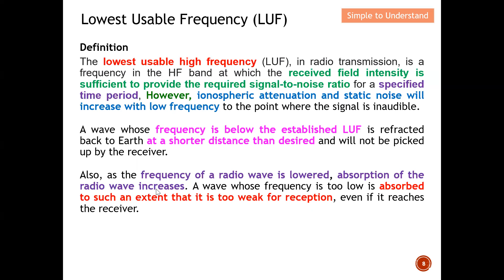Also, as the frequency of a radio wave is lower, absorption of the radio wave increases. A wave whose frequency is too low is absorbed to such an extent that it is too weak for reception even if it reaches the receiver. When using as low a frequency as possible, the skip zone is minimal — ideal for covering shorter paths — but the atmospheric absorption and static noise become so large that even if the signal is received, it cannot be understood.